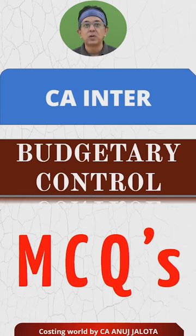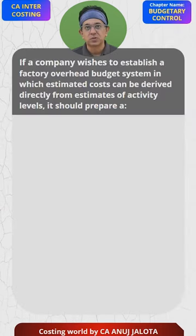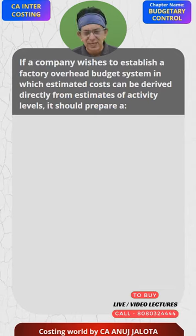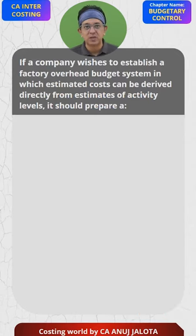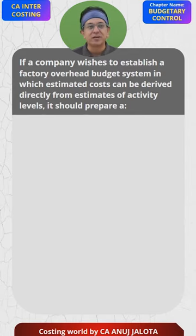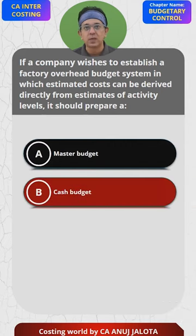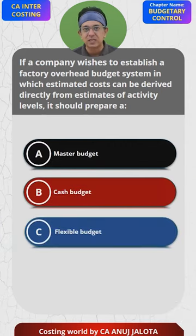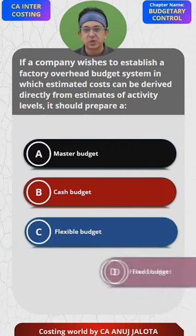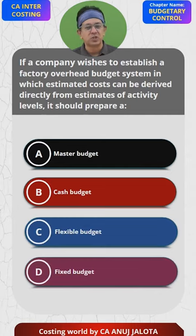CA Inter Budgetary Control MCQs. If a company wishes to establish a factory overhead budget system in which estimated costs can be derived directly from the estimates of activity levels, it should prepare: A) a master budget, B) cash budget, C) flexible budget, and D) fixed budget.